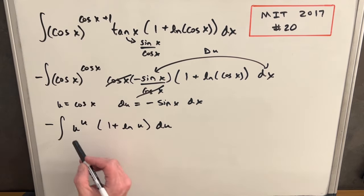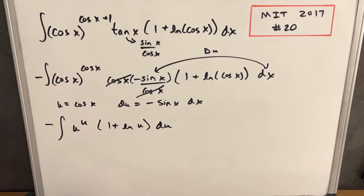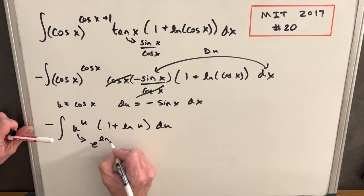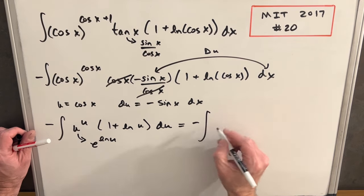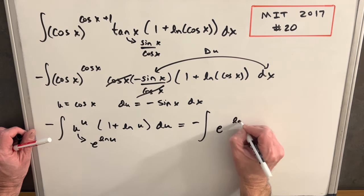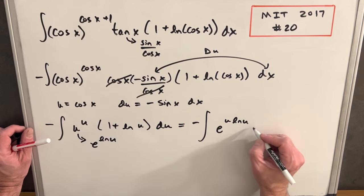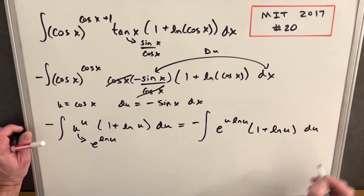The next thing to notice is this u to the u situation. When we're integrating and we have a variable in the exponent, we almost always want the base to be e. We can rewrite u as e to the ln u. So rewriting again, we'll have e to the ln u times u — taking that other u and putting it right in the exponent — giving us e to the u ln u, times 1 plus ln u, du.